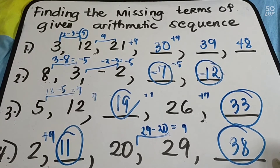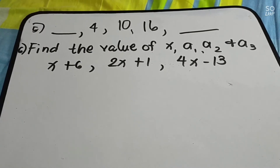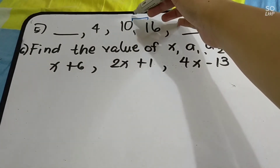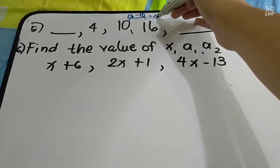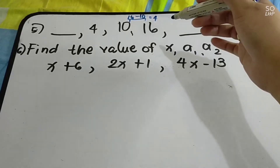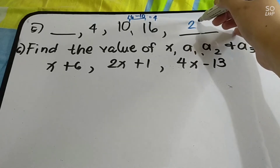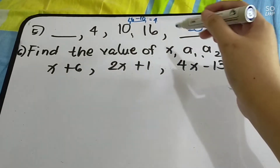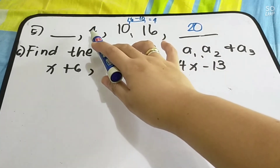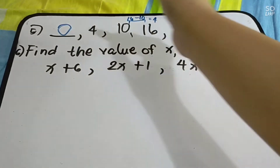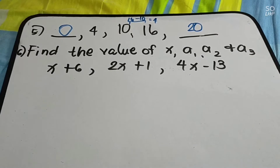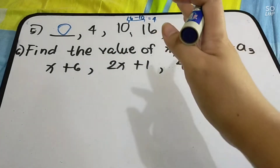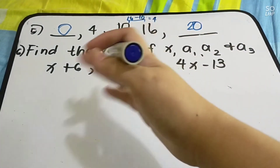Let's have a slightly more difficult example, number 5: we have 4, blanks, 16 — with missing terms on both sides. Find the common difference: 16 minus 10 = 6... so d = 6. Going right: 16 plus 6 = 20 is one missing term. Going left — since the missing term is on the left side — you subtract. 4 minus 6 = 0. Check: 0 plus 6 = 4. So when going right, you add; when going left, you subtract.